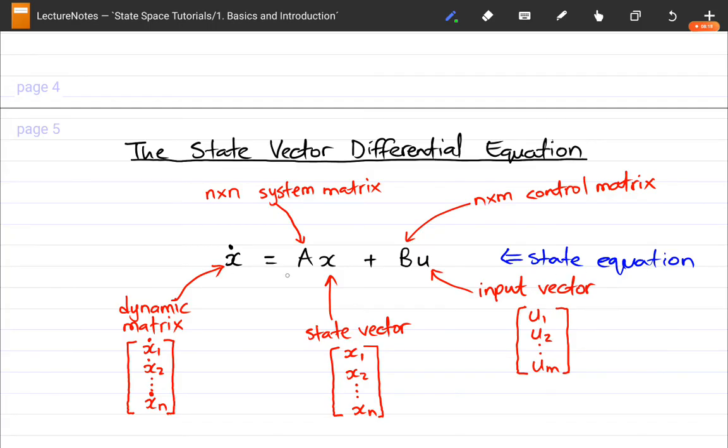And it's just x dot equals Ax plus Bu. And I'm going to require you to memorize this because we're going to be using it over and over for different kinds of applications and different examples and exercises. And you're going to realize every time whenever we come up with a state space model, this is going to be how we're going to form it.